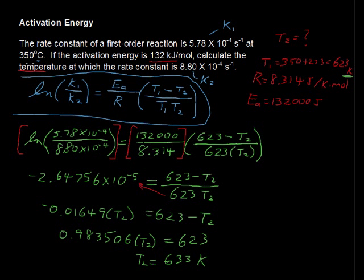Well, presumably we want this answer in the same units that we got the question in, so we'll just subtract 273. And so the temperature that we need to get this rate constant of 8.80 times 10 to the negative 4th, the temperature that we need is 360 degrees Celsius.